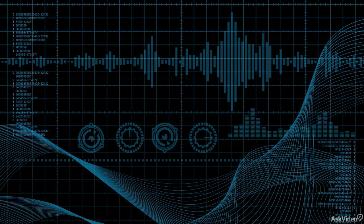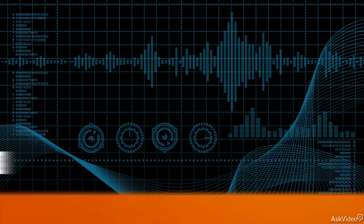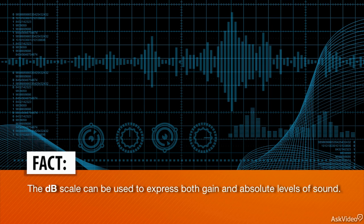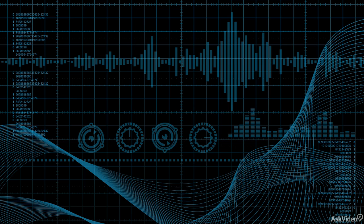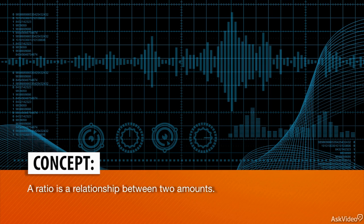Besides using the dB scale to express gain—the difference in level between two sounds—what if you wanted to use this convenient decibel scale to express the absolute level of a sound? Well, since a dB measurement is always a ratio, using dBs to express the specific level of a sound wave is done by comparing the level of the sound to a reference level.